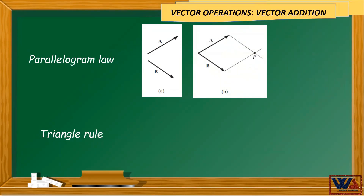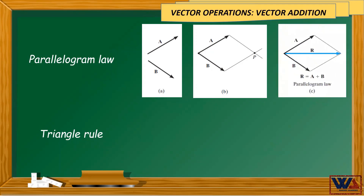Second, complete drawing the parallelogram by drawing lines parallel to A and B as shown in figure B. The drawn lines will intersect at point P. Then draw a line from the starting points of vectors A and B to the intersection point P, as shown in figure C. This line, which is R here, represents the result of addition of vectors A and B.